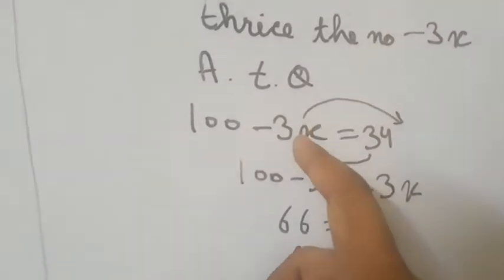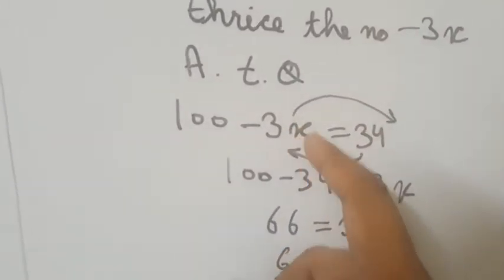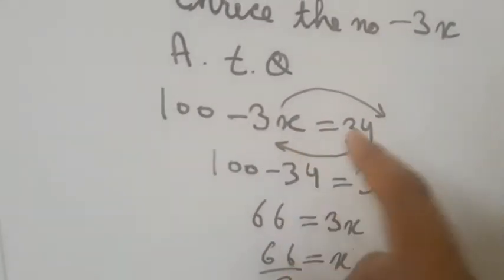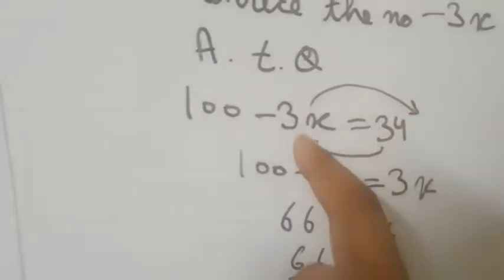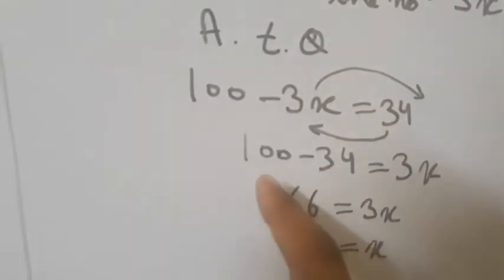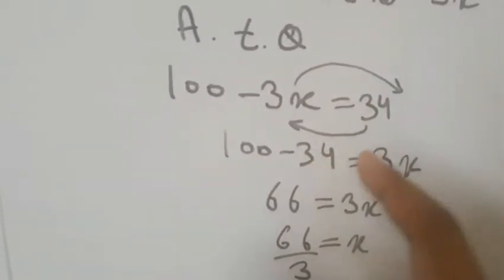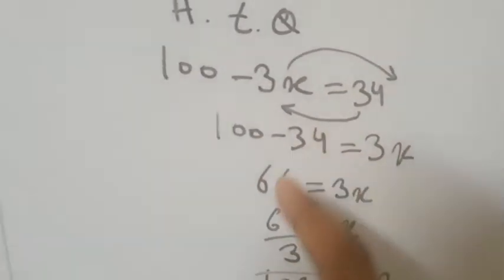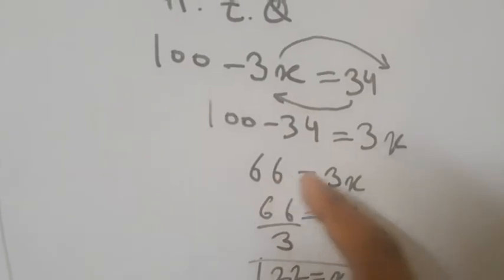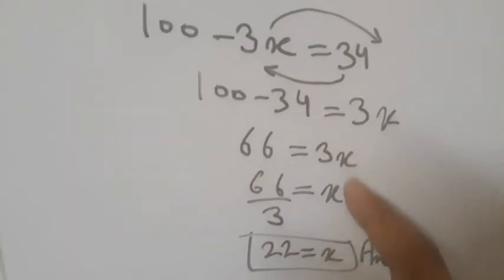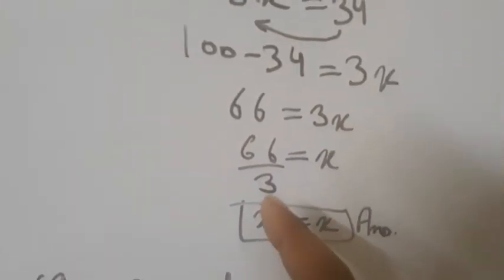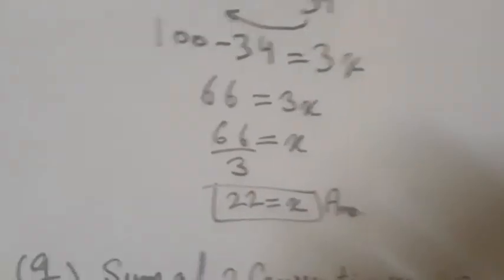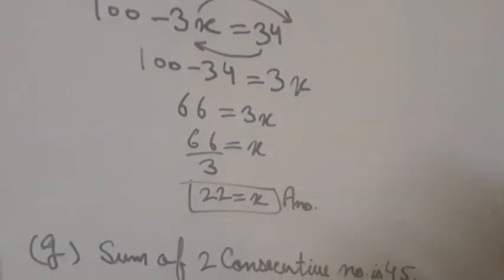I brought 3x to the right-hand side, as shown by the arrow. So 100 minus 34 = 3x, which gives 66 = 3x. Dividing 66 by 3, the answer is x = 22.